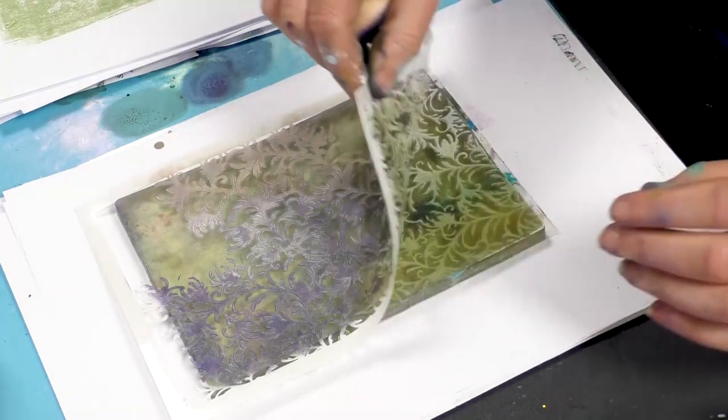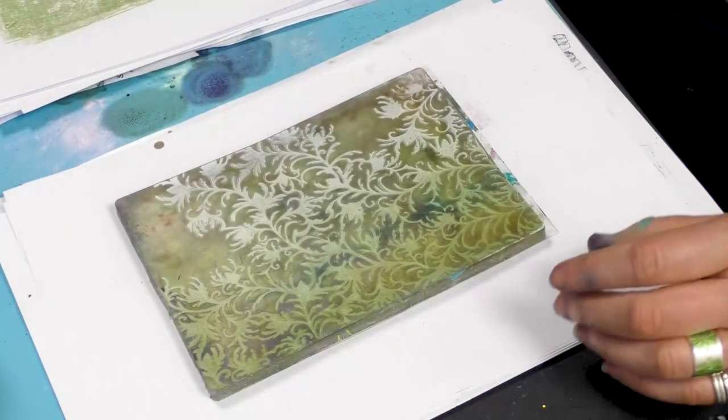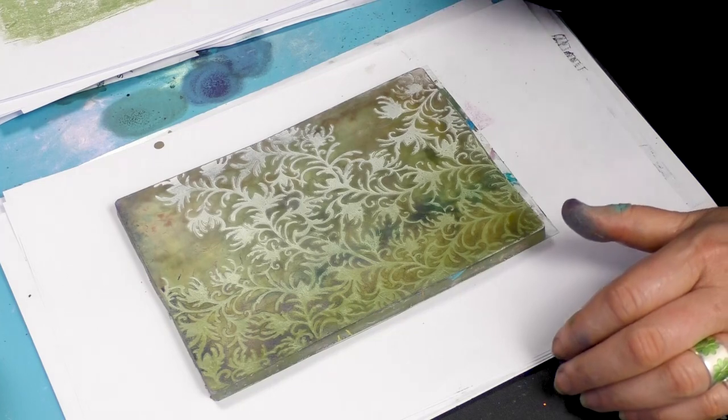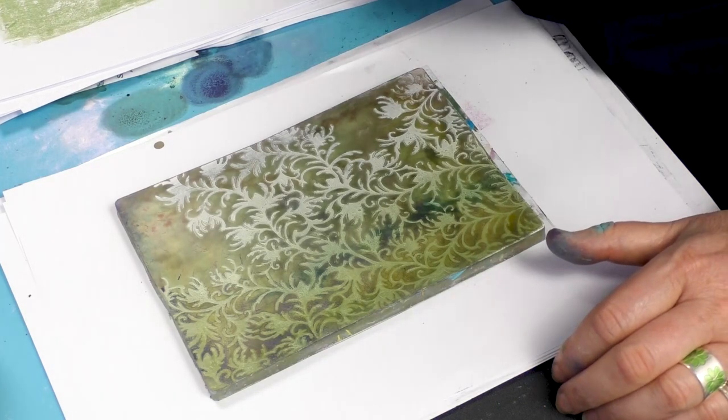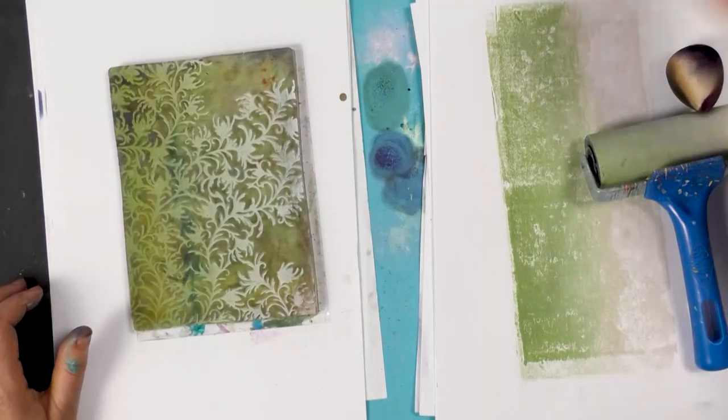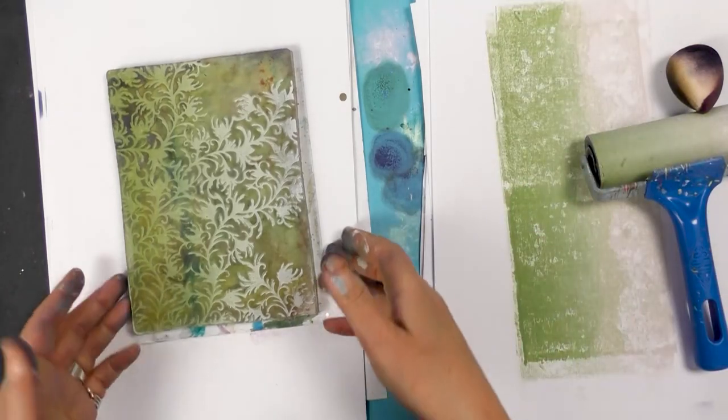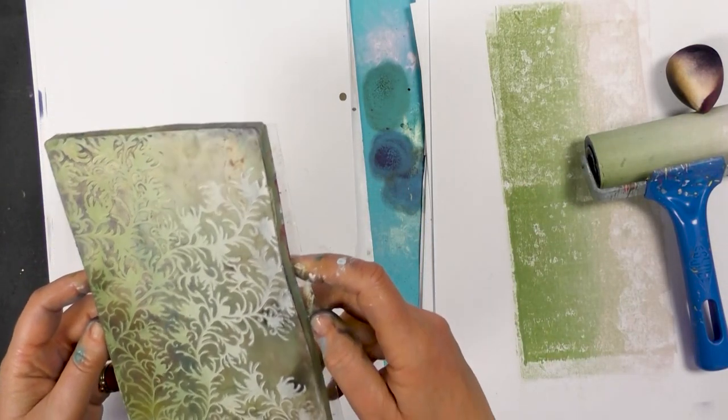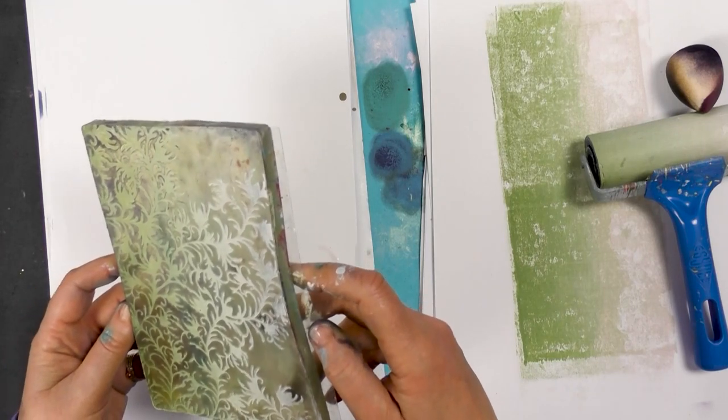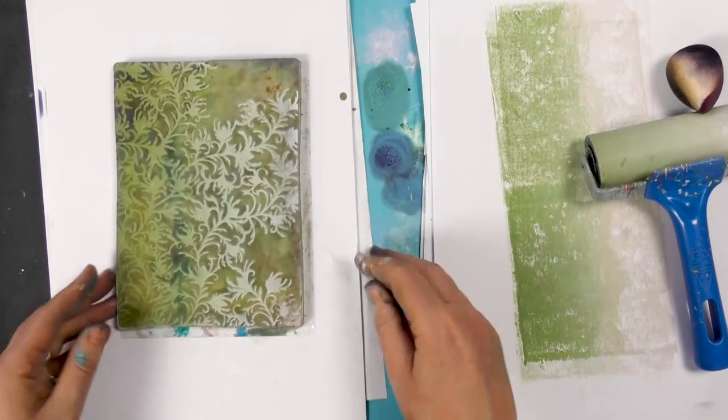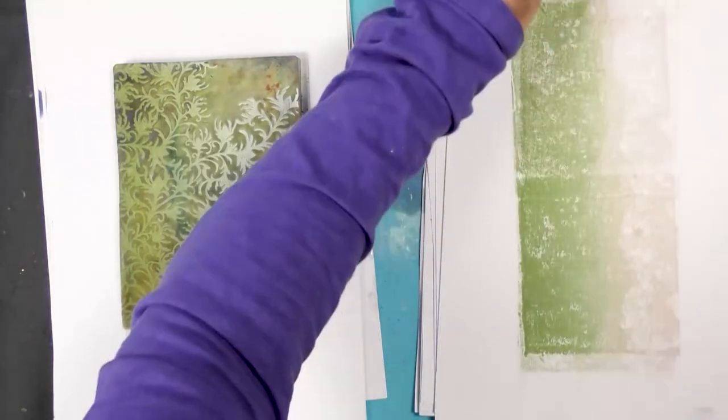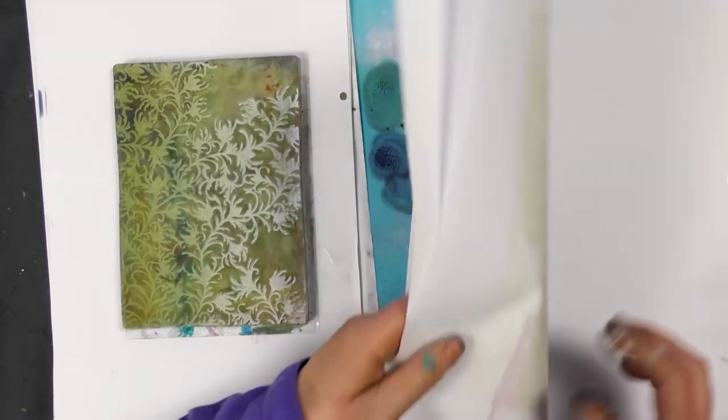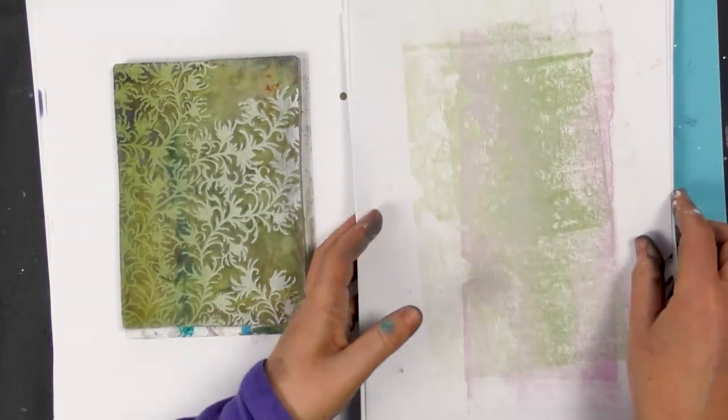Okay so taking that off now and we'll just pop that into some water and I'll just double check that this is all dry now. Yeah I don't think there's any kind of a sheen on that so that looks dry and ready to put a layer over the top of that to pull the image off.